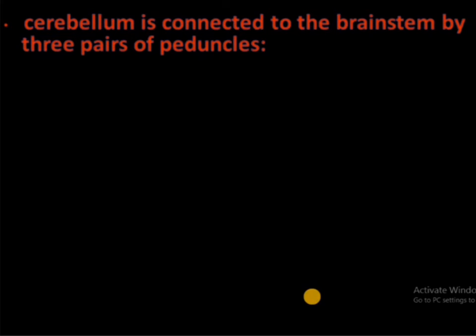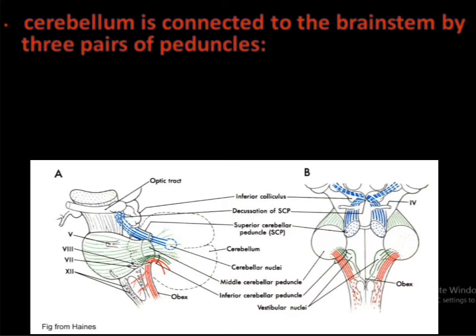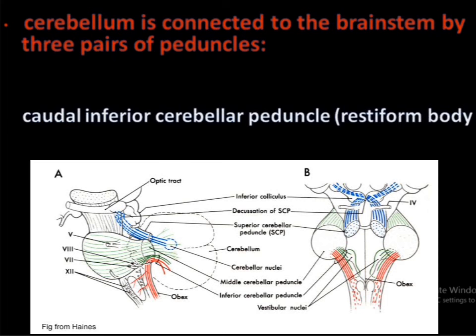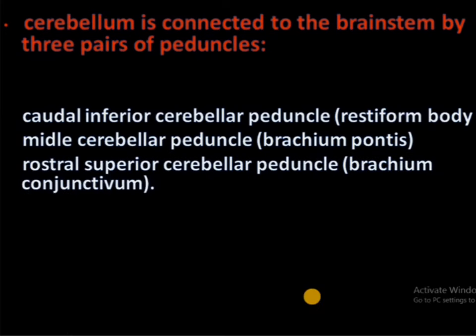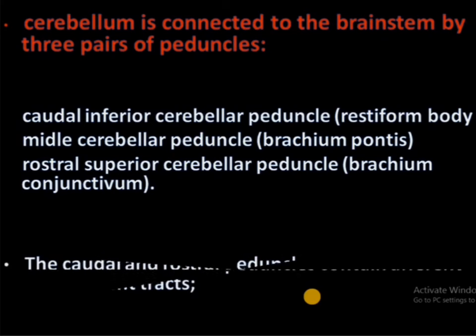The cerebellum is connected to the brain stem by three pairs of peduncles: the caudal or inferior cerebellar peduncle, called the restiform body; the middle cerebellar peduncle, called the brachium pontis; and the rostral or superior cerebellar peduncle, called the brachium conjunctivum.